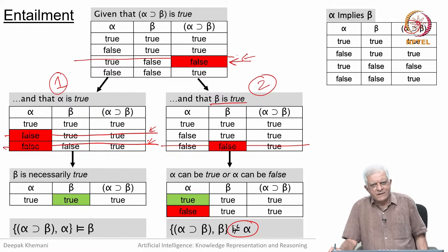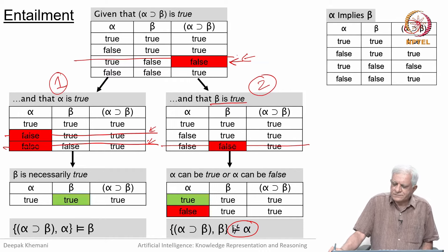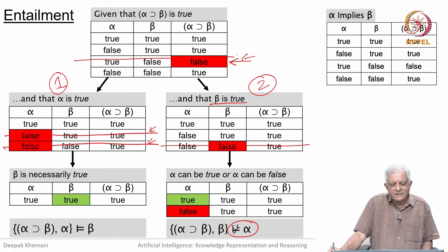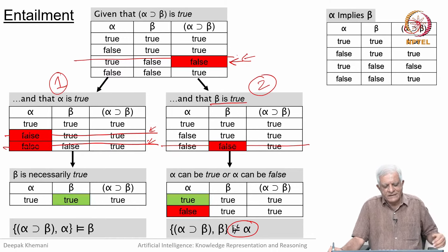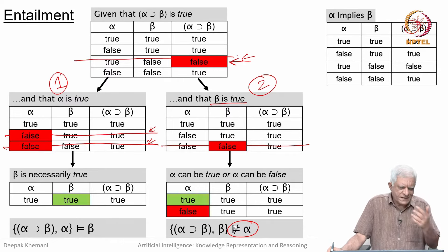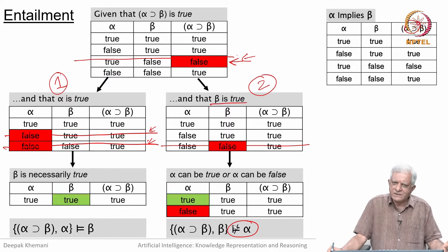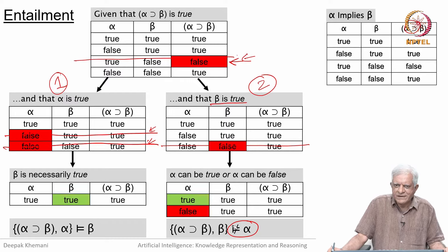We are looking at logic. We have looked at the notion of a logic as a formal language, the semantics of logical connectives, and the semantics of compound sentences. We made a passing reference to the fact that the number of compound sentences is infinite, because you can always take any two input sentences, take any connective, and produce a new sentence — so that is an endless process.